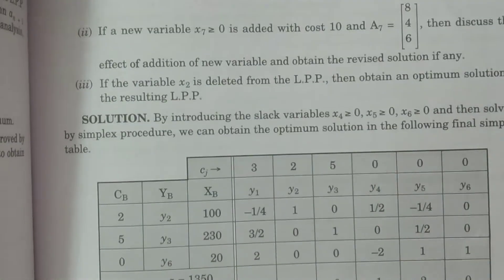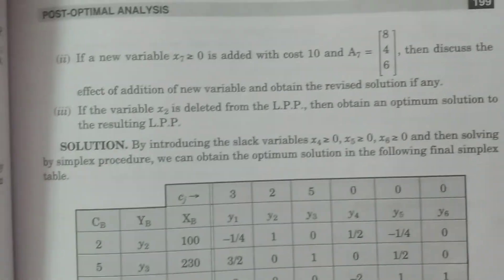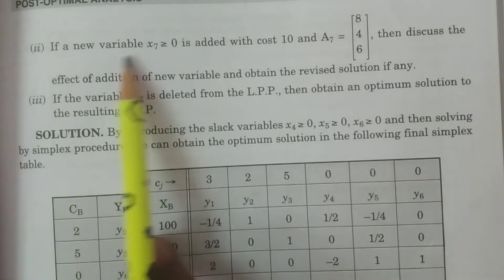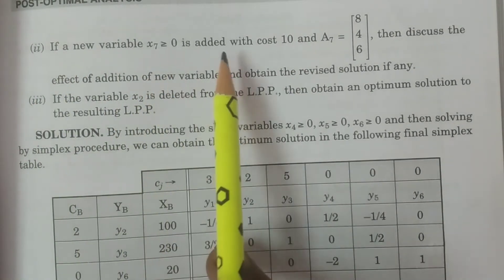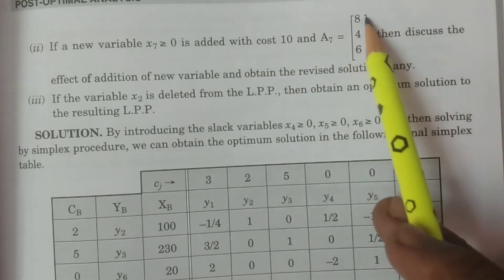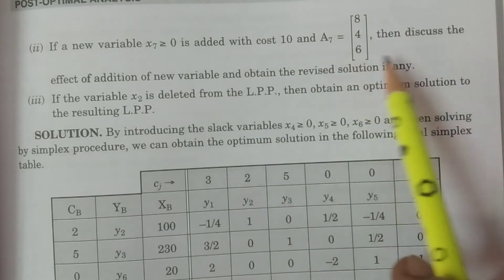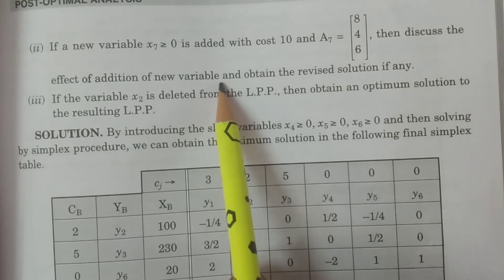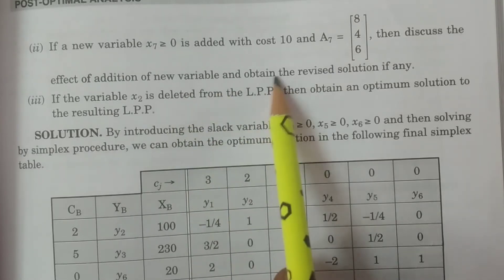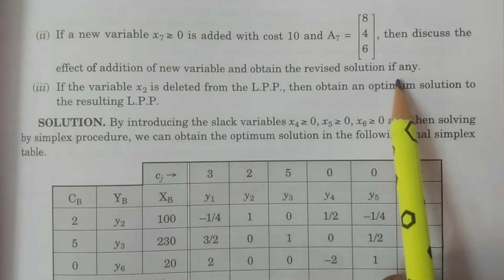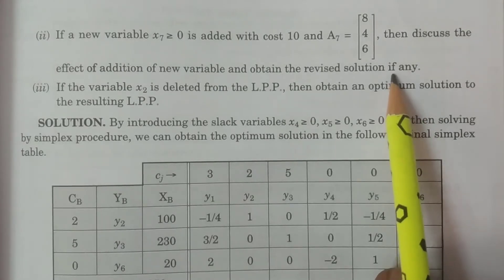Question 2: If a new variable x7 ≥ 0 is added with cost 10 and a7 = (8, 4, 6), then discuss the effect of adding this new variable and obtain the revised solution if any.